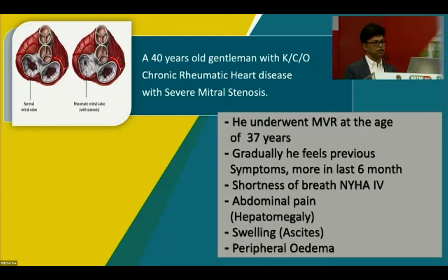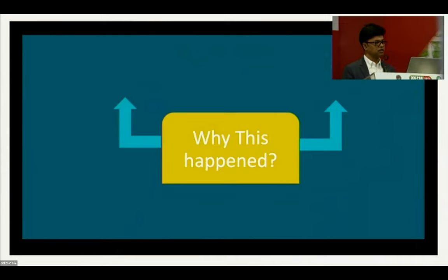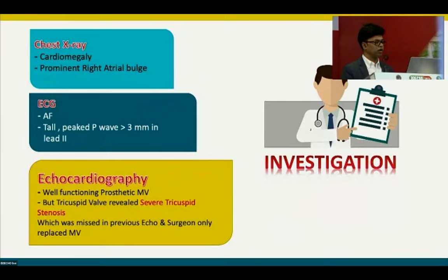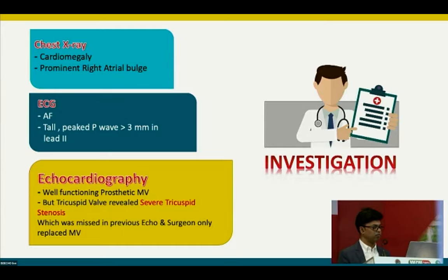What happened? Was it acute valve thrombosis, vegetation, infective endocarditis, valve failure, pannus formation, mechanical valve failure, or other pathology? Investigations: Chest X-ray showed cardiomegaly; ECG showed atrial fibrillation; echocardiography demonstrated a well-functioning prosthetic mitral valve — but the tricuspid valve revealed severe tricuspid stenosis, which was missed on the initial echo, and the surgeon only replaced the mitral valve.